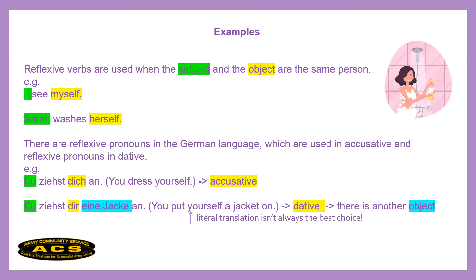Just like in English, there are also reflexive pronouns in the German language, and you can use them in either accusative or dative. My best recommendation is to watch videos about accusative and dative, or read up on it. Basically, accusative means a direct object and dative an indirect object. For example, 'Du ziehst dich an' — 'You dress yourself' in English. Here the reflexive pronoun 'dich' is accusative because you, 'du,' are the direct object, referring back to yourself.